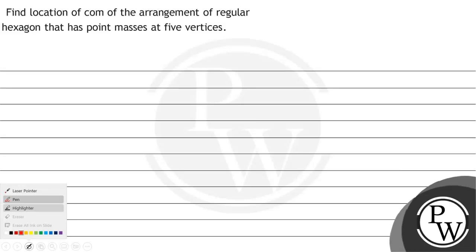Hello, let's read the question. The question says find location of center of mass of the arrangement of regular hexagon that has point masses at five vertices.